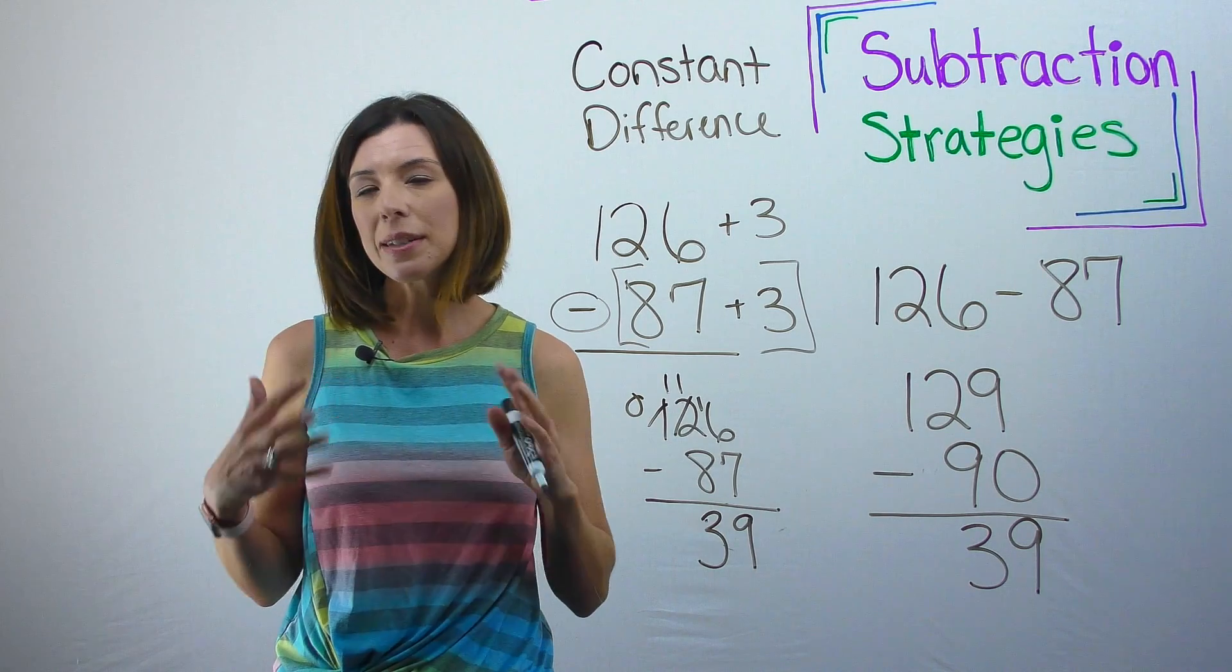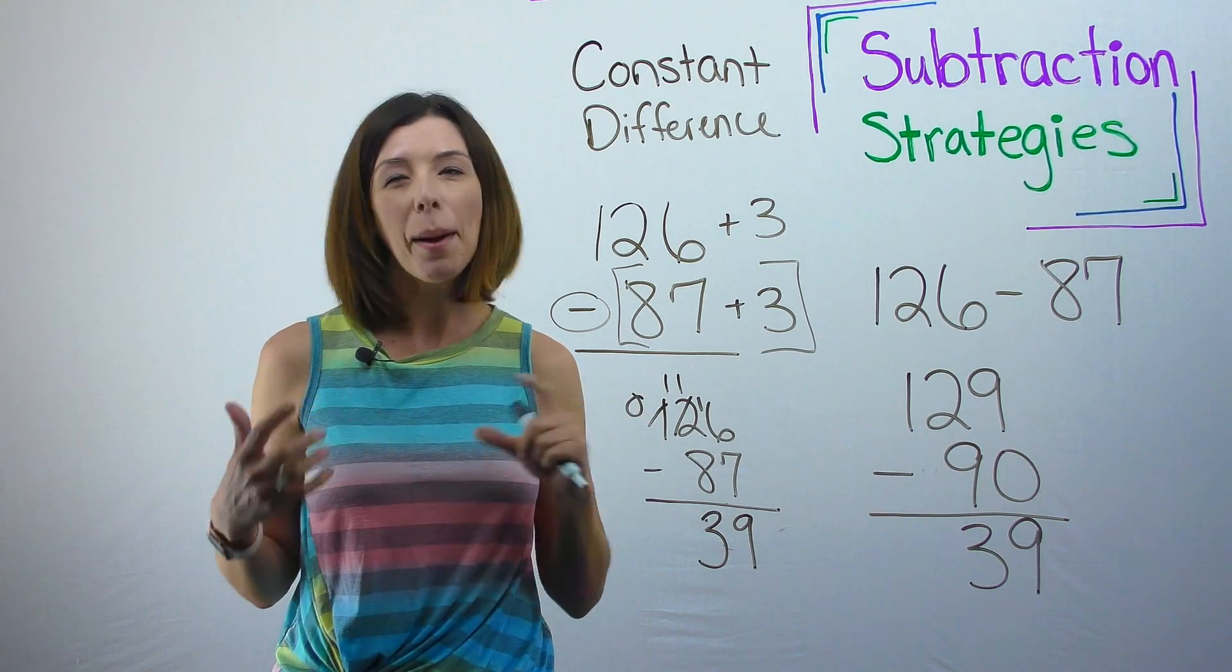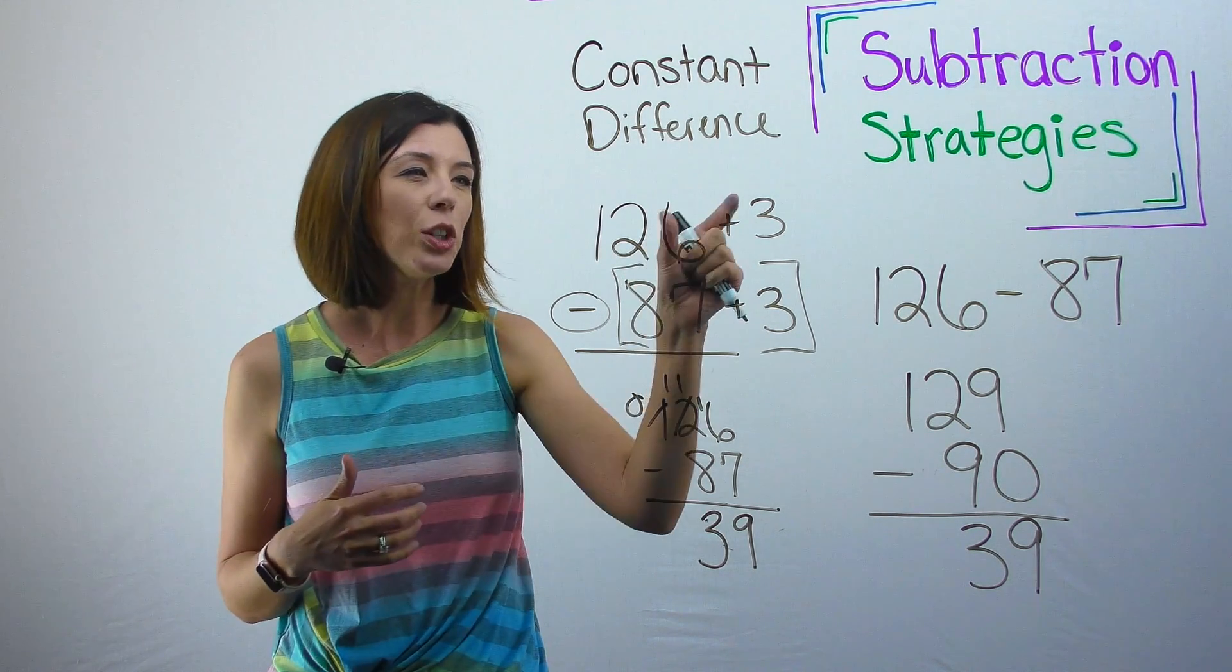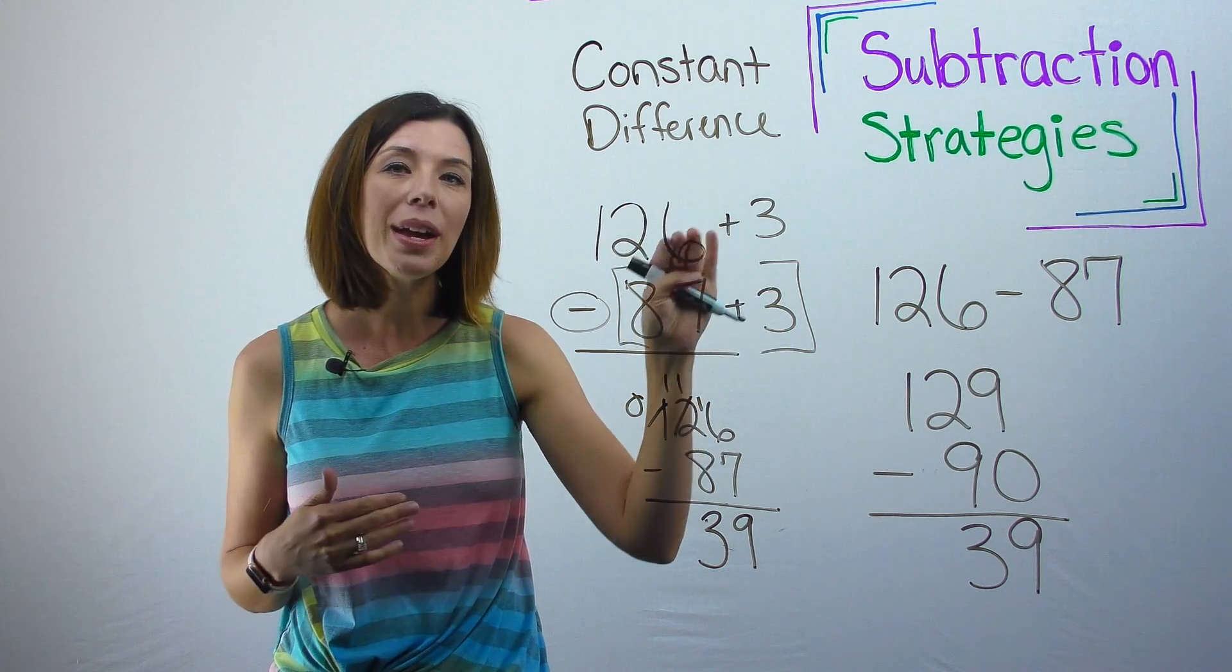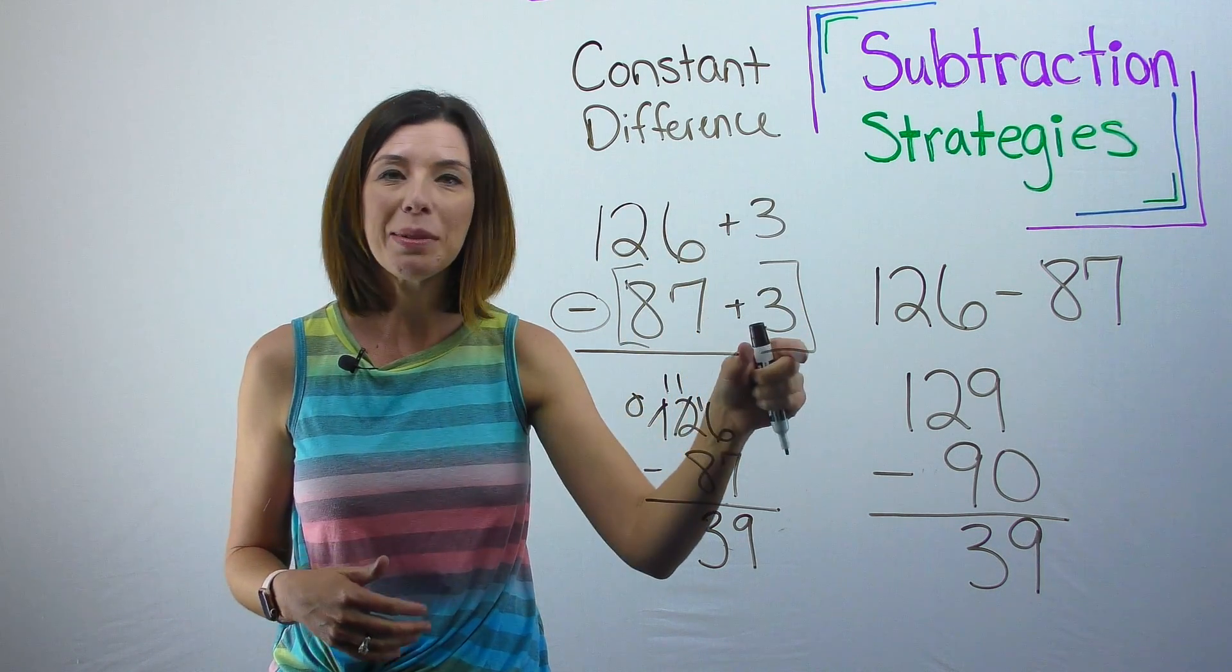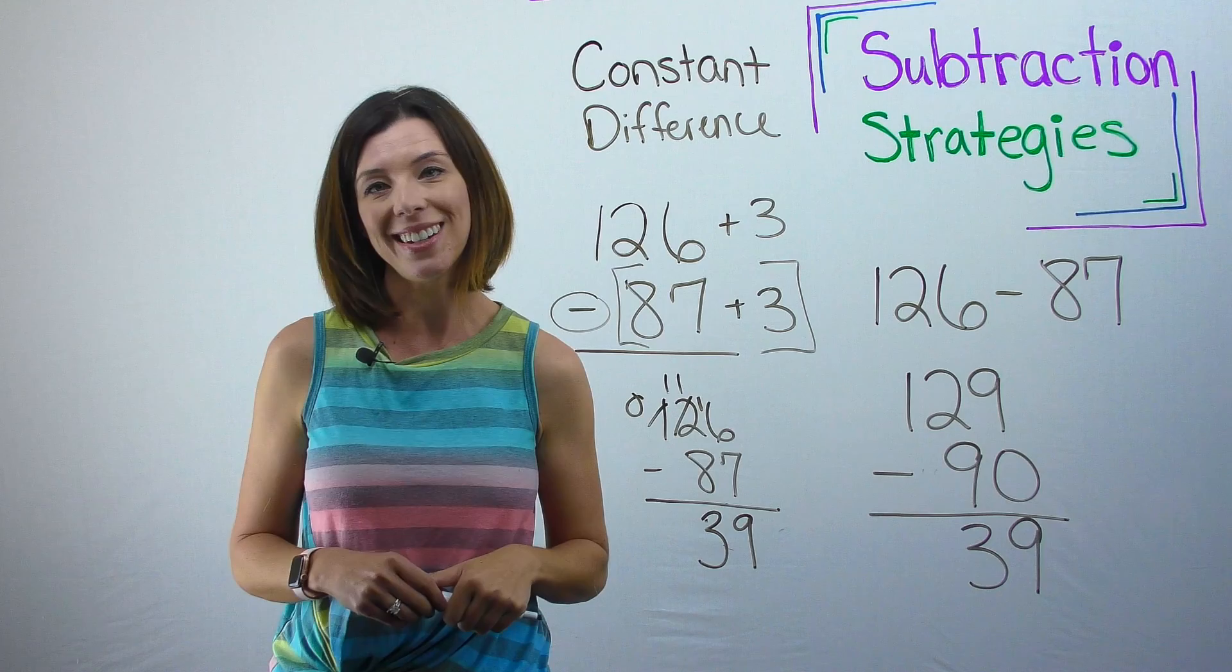Constant difference strategy. Very similar to the compensation method in that you're doing something to both the minuend and subtrahend, and it has to be the same. It has to be constant.